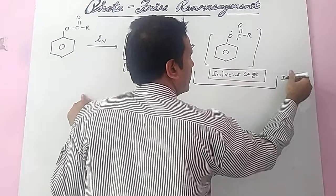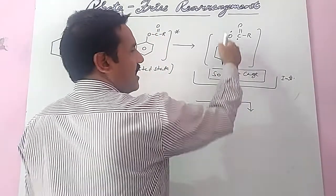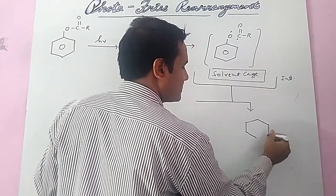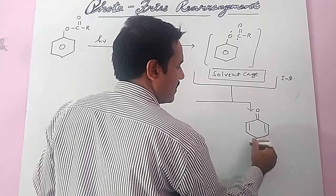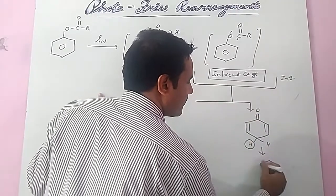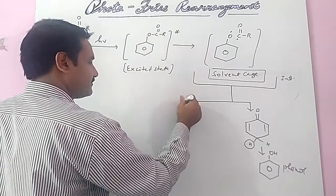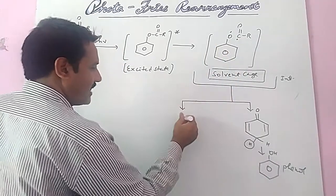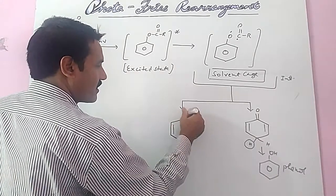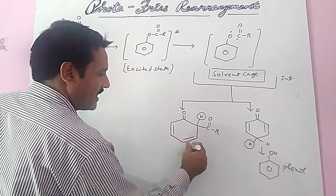After the formation of the intermediate, the first possibility is: if the phenoxide radical is freed from the solvent cage alone, then it converts into a quinoid form. Then hydrogen migrates and a bond migrates inside, and it converts into phenol. That is the first product. The second possibility: when both radicals combine and the acyl group is placed at the ortho position in a benzene ring formation like this, then hydrogen shifts and it converts to the ortho product.